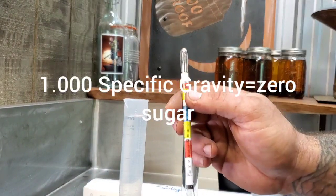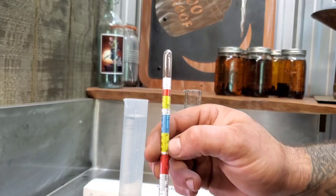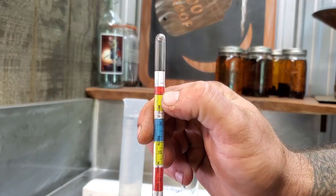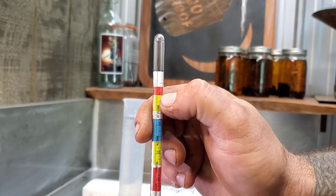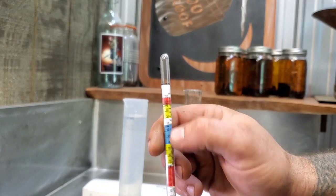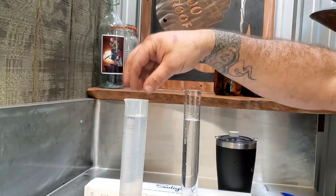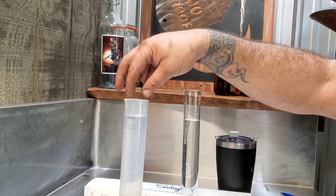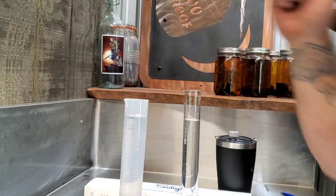Now, if you look across at your potential alcohol by volume, 1.000 says zero percent. Obviously being pure water, there is nothing in this that can be converted to alcohol.